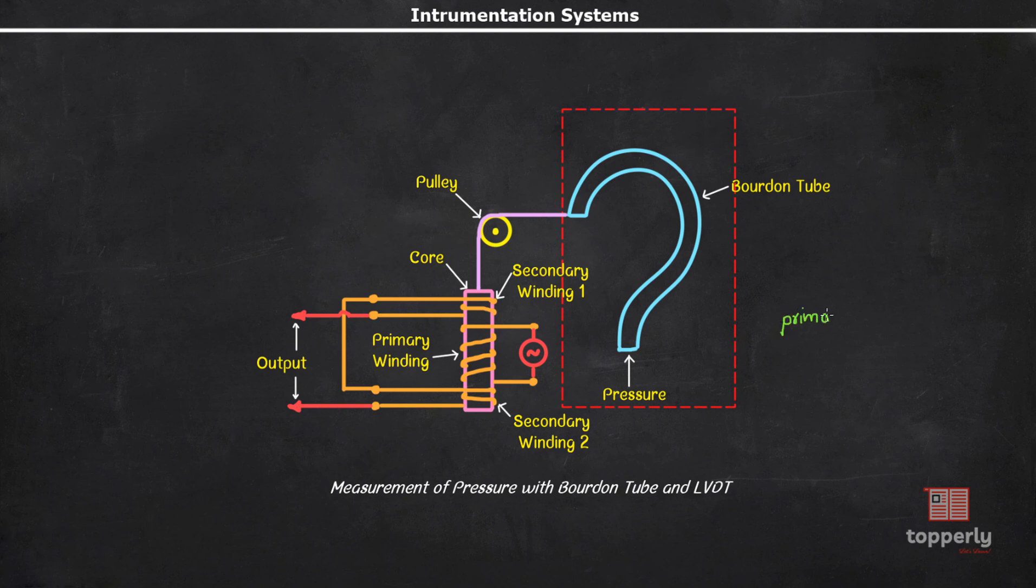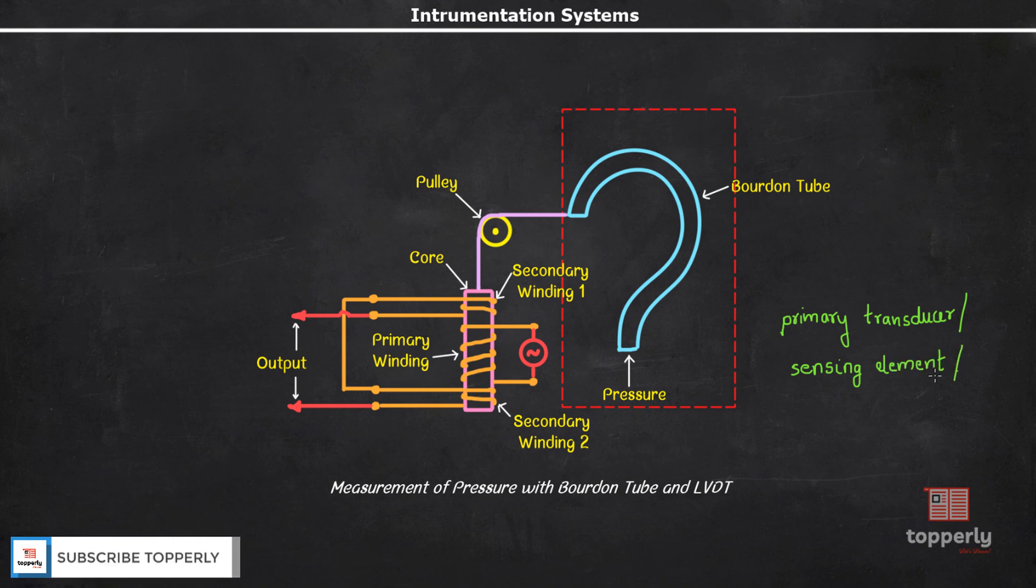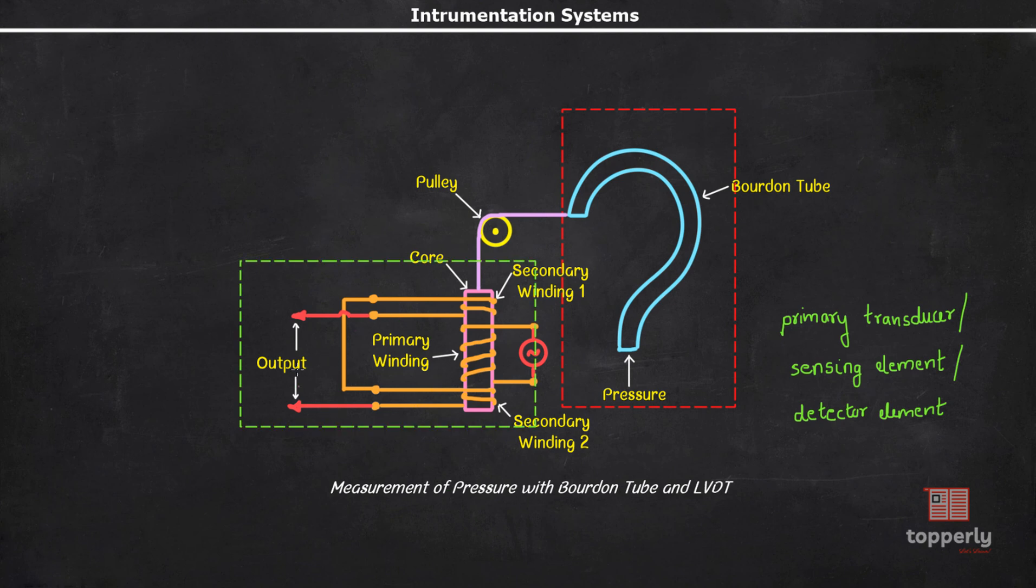That is, primary transducer or sensing element or detector element. Now, this second block, that is, this block, which transforms the output of sensing element, is called a transduction element. That is, transduction element or secondary transducer.